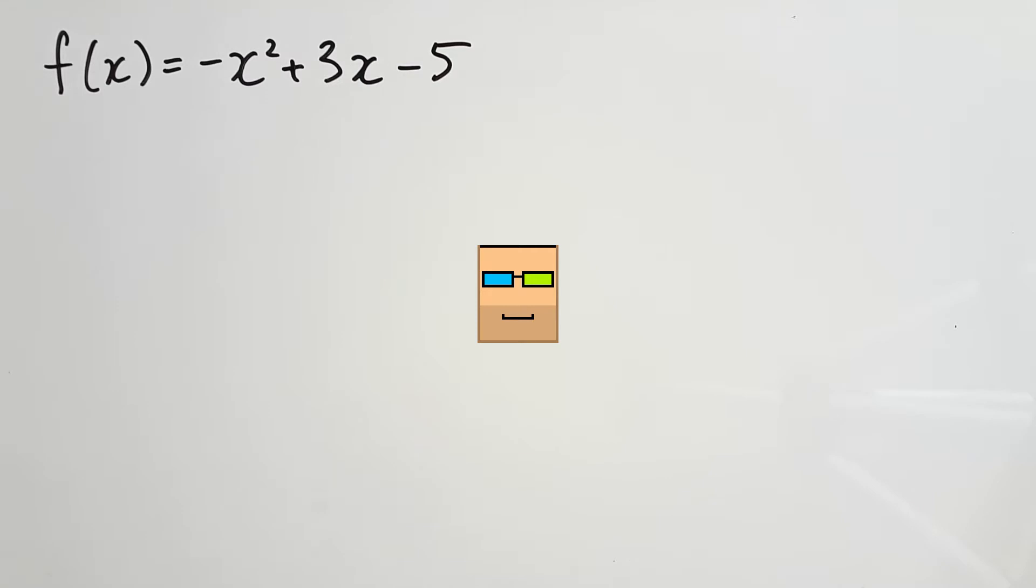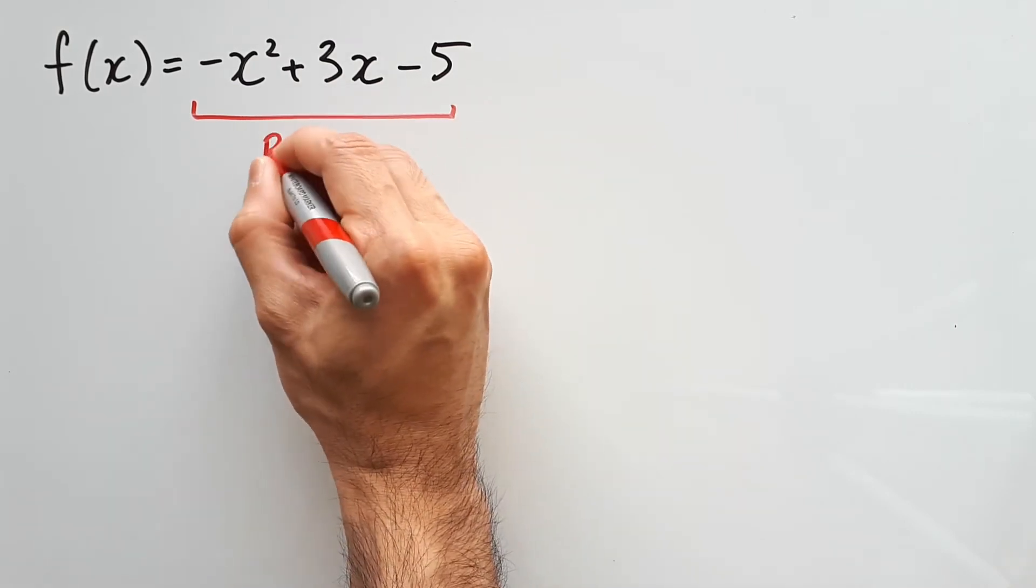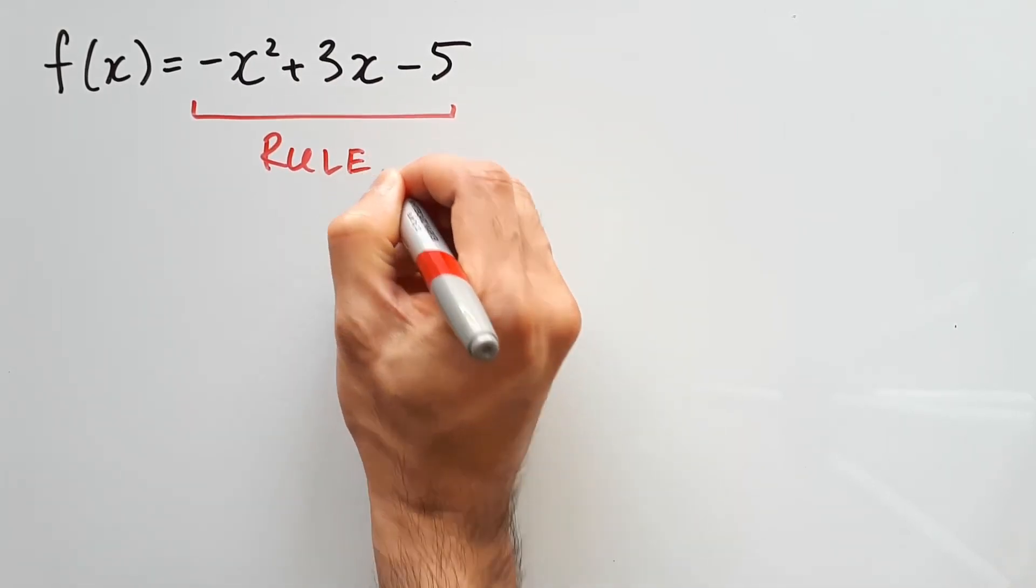G'day guys, this is the MathBase. Now before I explain how we're going to do those calculations, let's just talk a little bit about how functions even work in the first place. So on the right hand side we have negative x squared plus 3x minus 5. This is known as the rule.